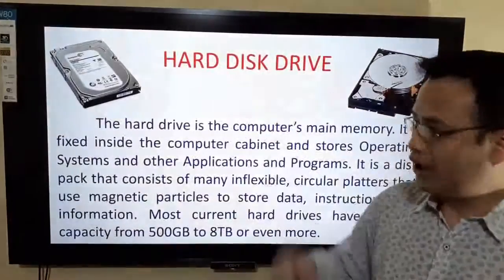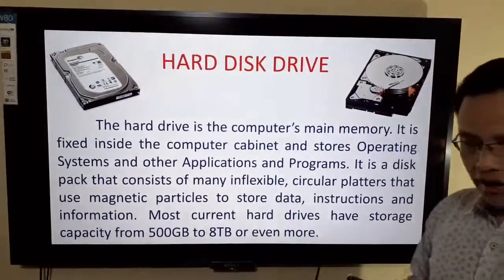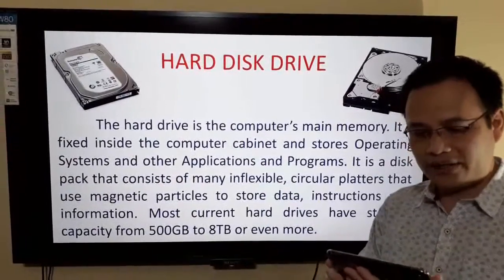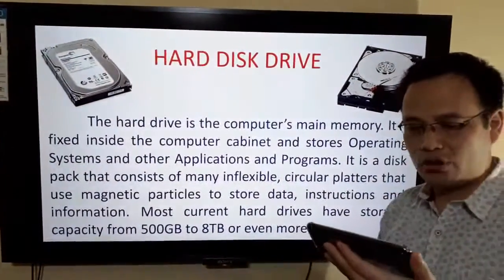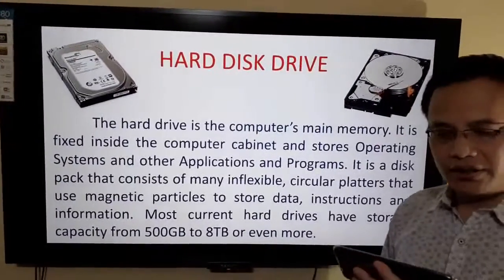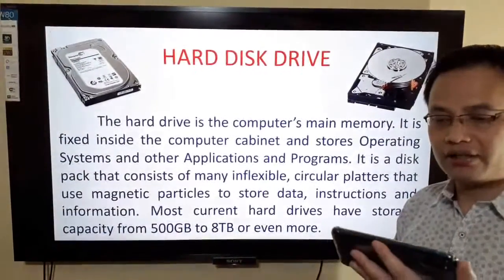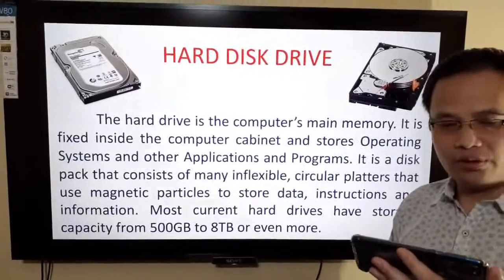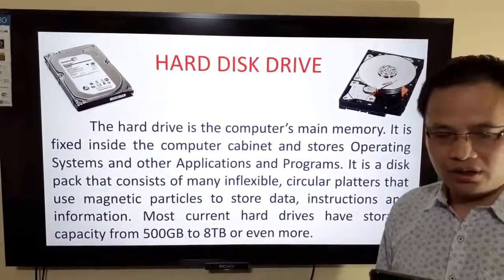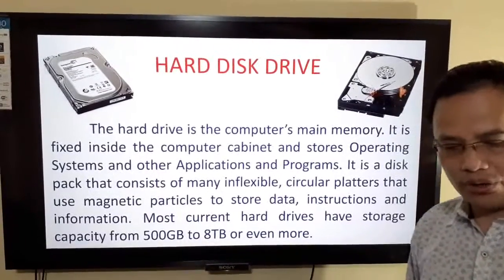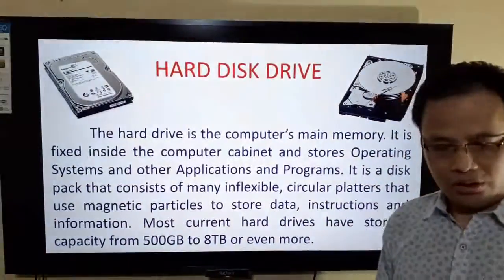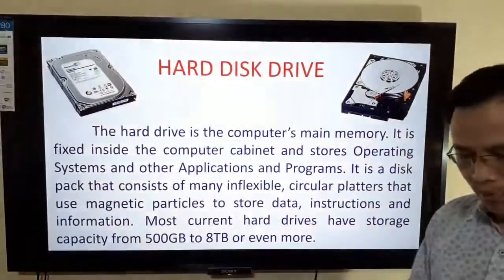First, let's start with the hard disk. The hard disk, also called a hard drive, is the computer's main storage device. It is fixed inside the computer cabinet and stores the operating system and other applications and programs. It consists of many inflexible circular plates that use magnetic particles to store data, instructions, and information. Most current hard drives have storage capacity from 500 GB to 8 TB or even more.